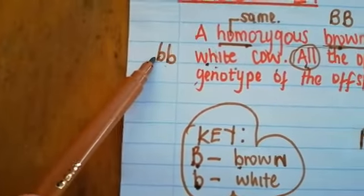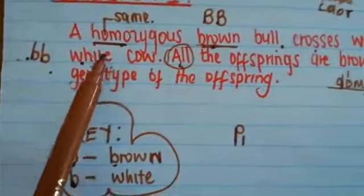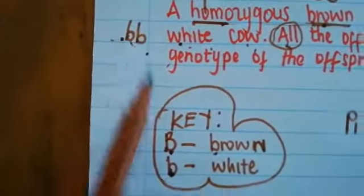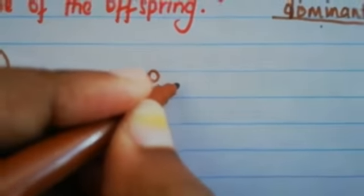So it's going to be two small letter b, since it's a homozygous white cow. And we know that small letter represents white. So again, you go back to your diagram. And we do this. P1.